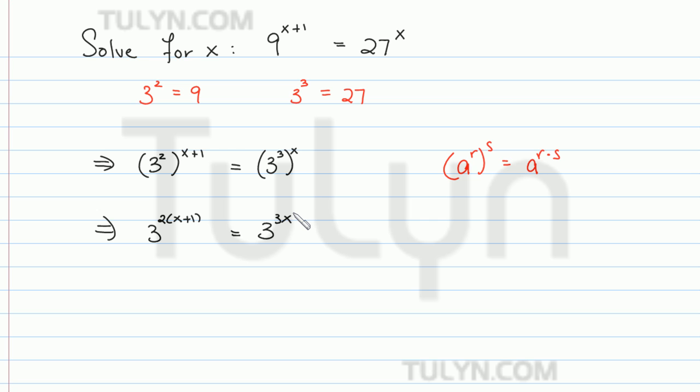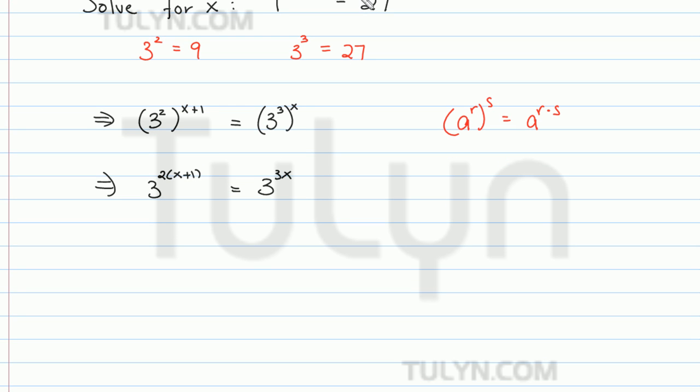So now, since the bases are both the same, since the bases are both 3, what we can do is just equate the exponents. The only way these two can be the same is if 2 times x plus 1 is equal to 3x.